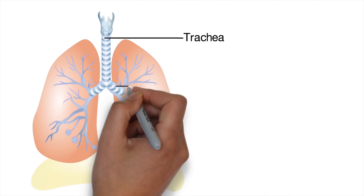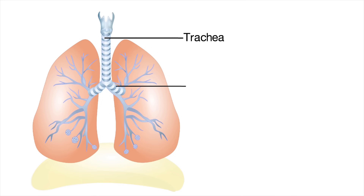When the air gets to the bottom of the trachea, it divides into the two lungs through tubes called the bronchi — singular: bronchus. If we look at the trachea, the bronchus, and then the next tubes called the bronchioles, it almost looks like an upside-down tree.